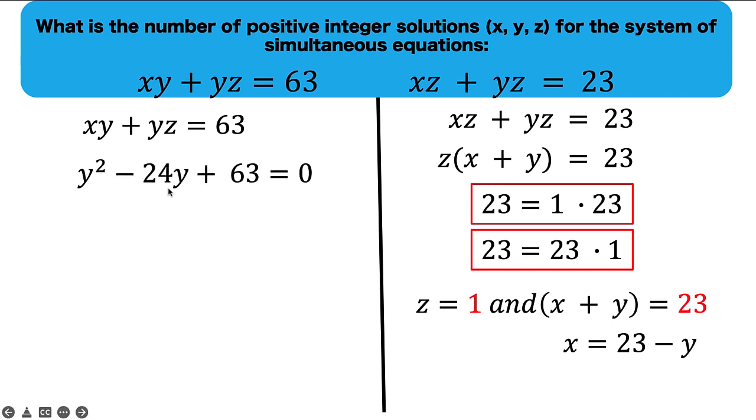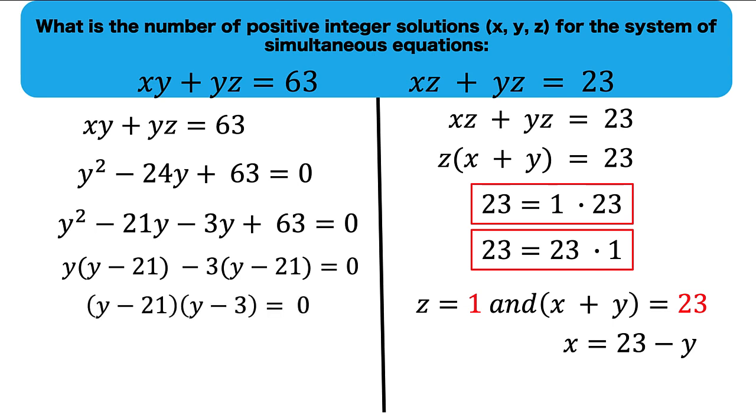We can split this minus 24y into minus 21y minus 3y so that we can factor by grouping. And here is a common factor of y minus 21 that we factor out again. And since the product of these two factors is 0, each one of them is equated to 0. And finally we have y equals 21 and y equals 3.